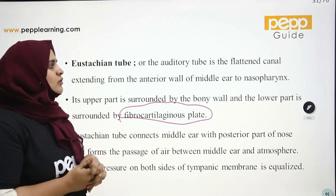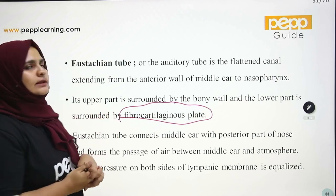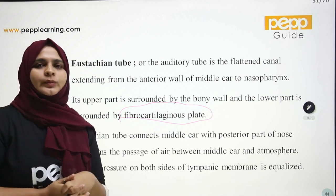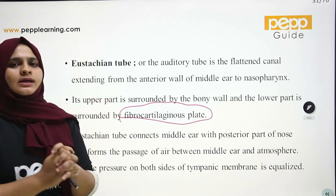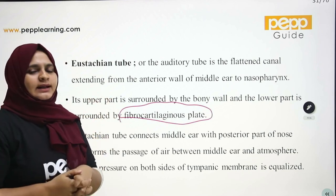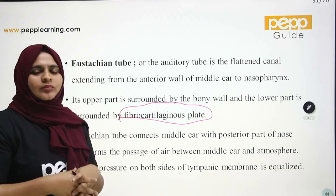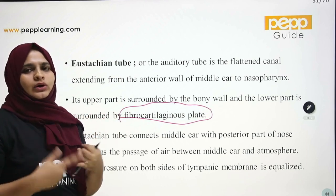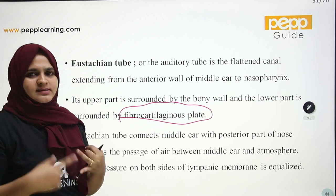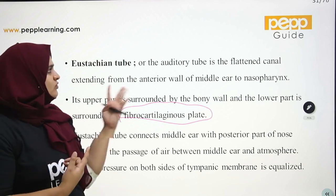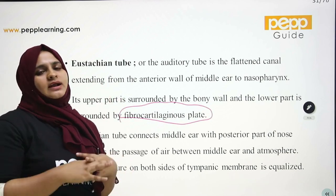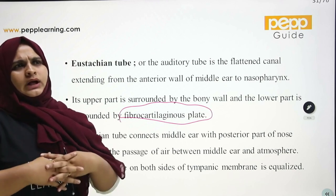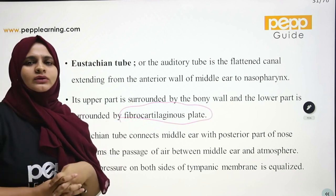So in Part 2 we covered the middle ear: the tympanic membrane with its three layers, the auditory ossicles, the auditory muscles, and the eustachian tube. That's all. Thank you.